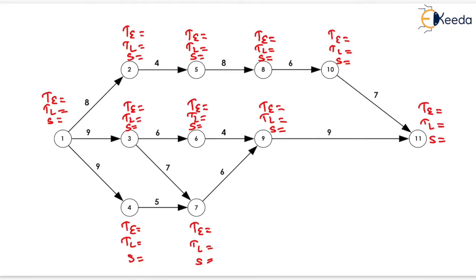For the initial event, TE equals 0. For event 2, TE = 0 + 8 = 8. For event 5, TE = 8 + 4 = 12. For event 8, TE = 12 + 8 = 20. For event 10, TE = 20 + 6 = 26.